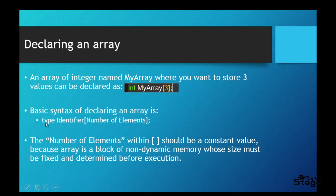The basic syntax is: type — for example int, float, double, char, or whatever — then the identifier name for that array, and then the number of elements in square braces. The number of elements within the square braces should be a constant value when declaring an array, because an array is a block of non-dynamic memory whose size must be fixed and determined before execution. Once you give a size to an array, you cannot change it later in the program.